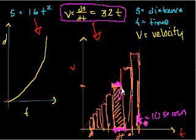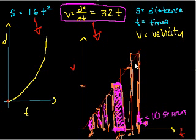But if you look at it visually, that also happens to be the area of this rectangle. And what we said is, if you wanted to know how far you travel after 10 seconds, you just do a bunch of these rectangles and you sum up the area. And you can imagine — it's actually true — the smaller the bases of these rectangles and the more of these rectangles you have, the more accurate your approximation will be.